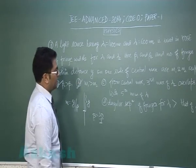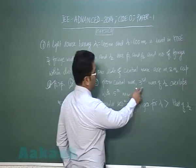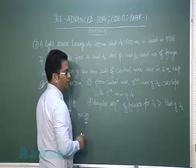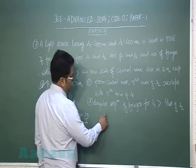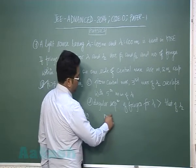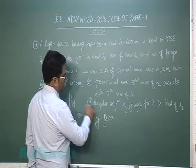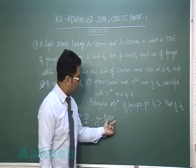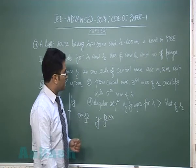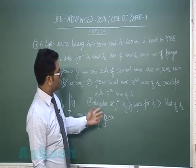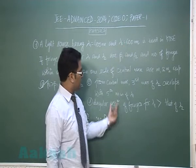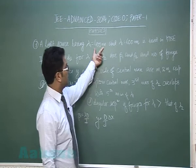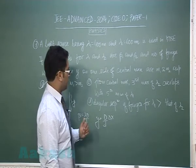Option B is correct. For option C: the third maxima of lambda2 overlaps with the fifth minima of lambda1. The position of a maxima is given by delta x equals n times lambda, and for a minimum it's (2n minus 1) times lambda by 2. For the third maxima of lambda2, the value is 1800, and for the fifth minima of lambda1, it is also 1800 — so this is correct.